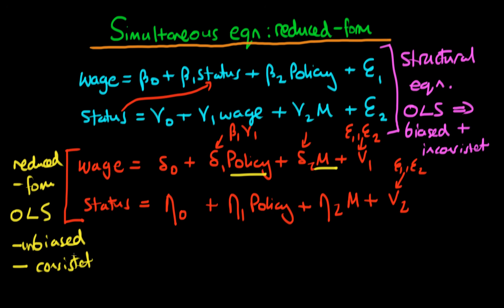So on the face of it it appears that might be quite a good thing to do. But the problem with that is that even though we might be able to estimate delta 1 and delta 2 in an unbiased way via OLS we can't necessarily from delta 1 and delta 2 actually back out our coefficients of interest which are really beta 1, beta 2, gamma 1 and gamma 2.